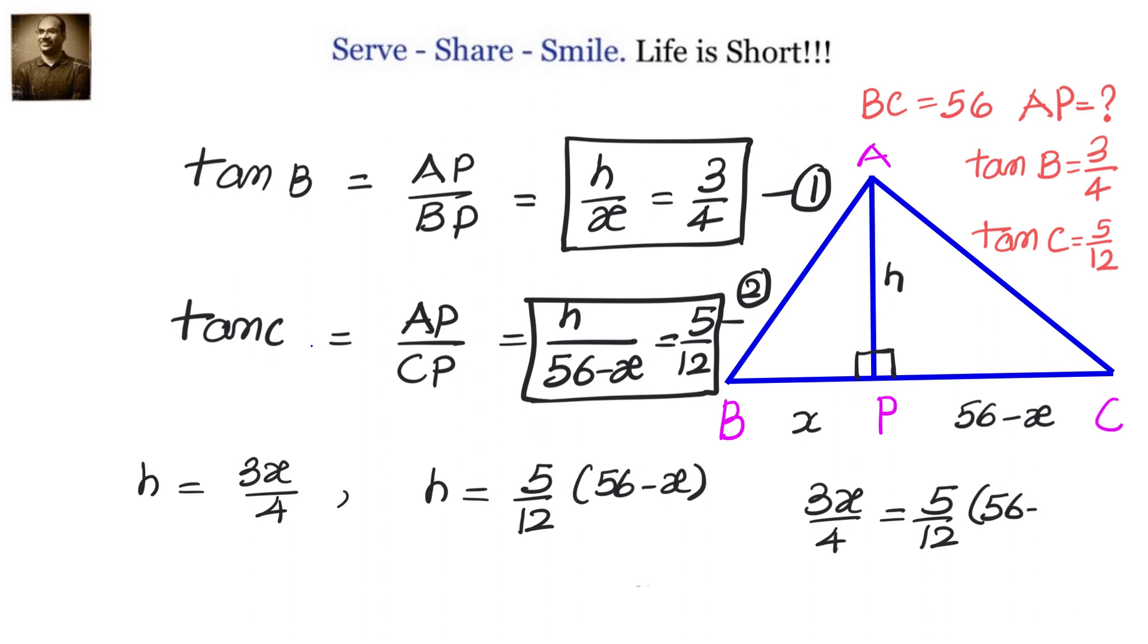Let us simplify. Cross multiply - we will get 9X equals 280 minus 5X. On simplification, we'll have 14X equals 280, and that will give us X equals 20 centimeters.